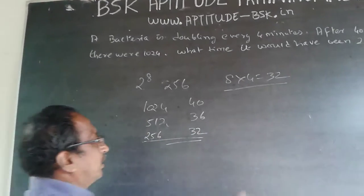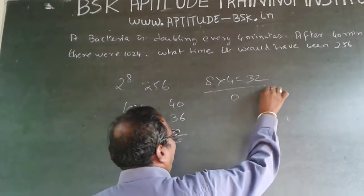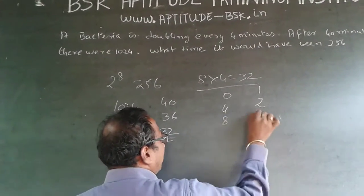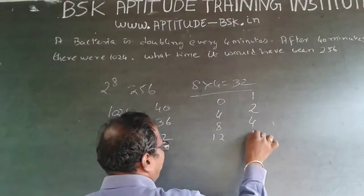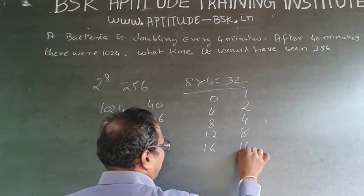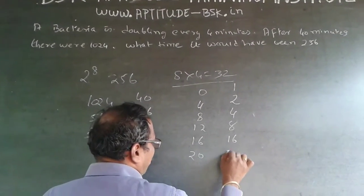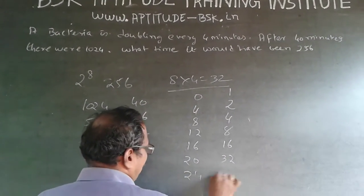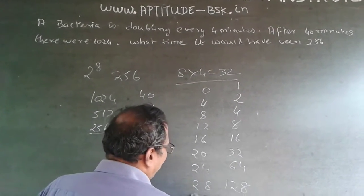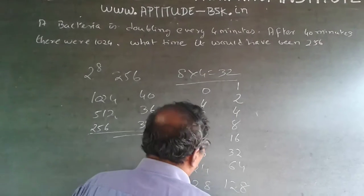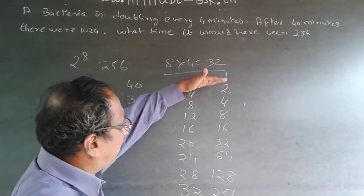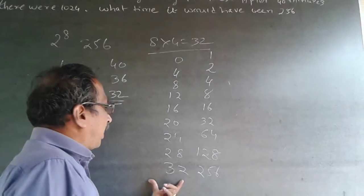If you want to do it the detailed way: at 0 minutes it's 1; at 4 minutes it's 2; at 8 minutes it's 4; at 12 minutes it's 8; at 16 minutes it's 16; at 20 minutes it's 32; at 24 minutes it's 64; at 28 minutes it's 128; and at 32 minutes it's 256.